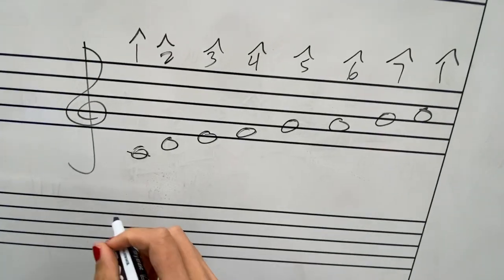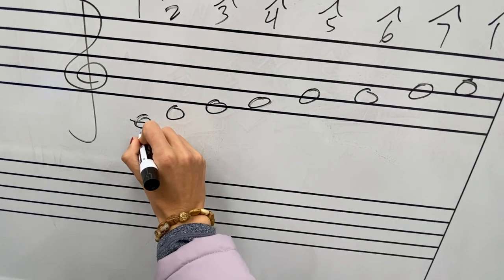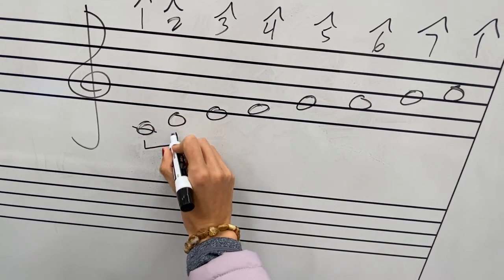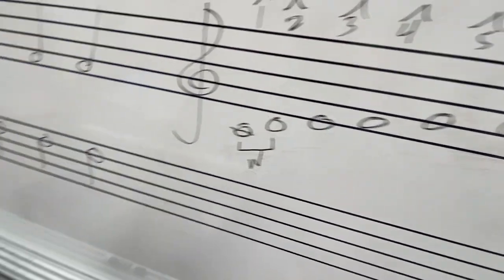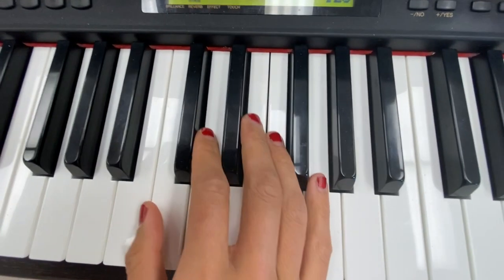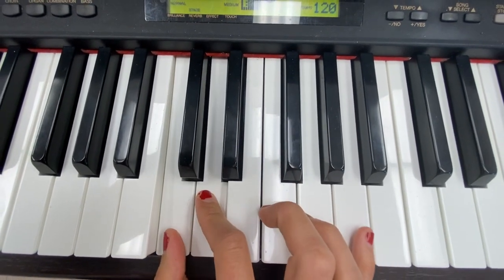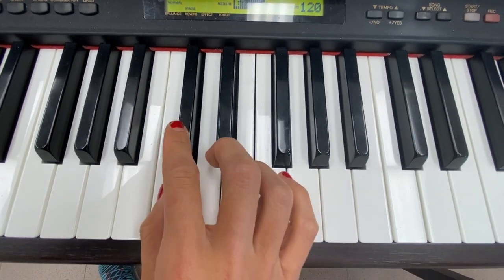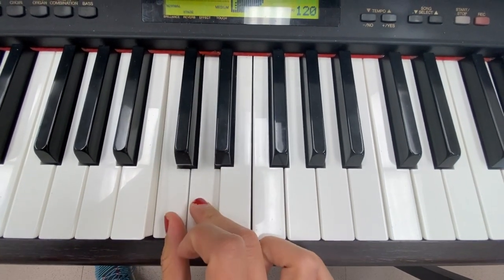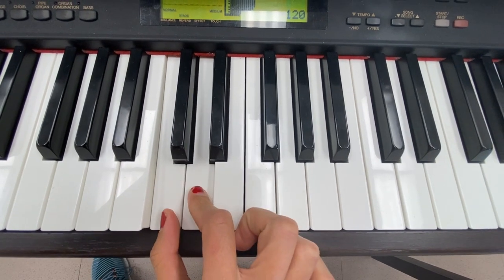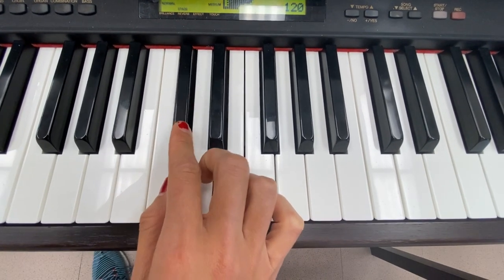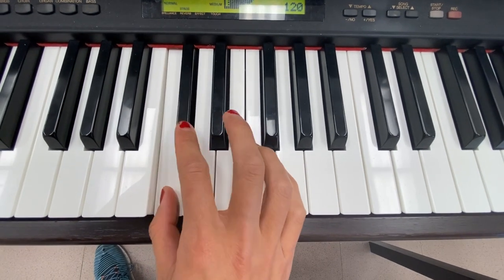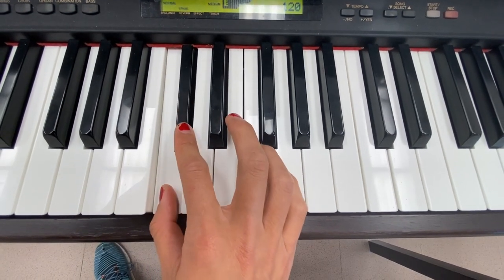The pattern for all major scales is this: from scale degree one to two you have a whole step. A whole step is characterized by two semi-tones apart — two notes that are two semi-tones apart. You can think of it as a distance where you have a note in between, whereas a half step would be the smallest step on the scale.